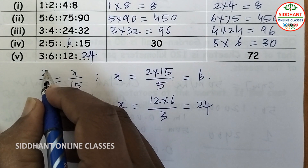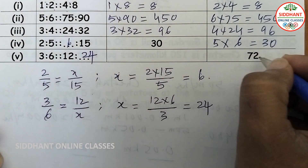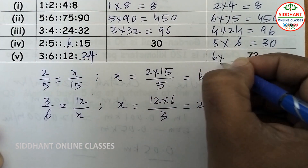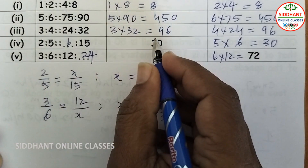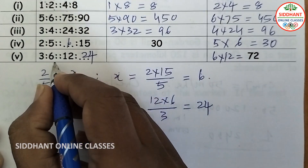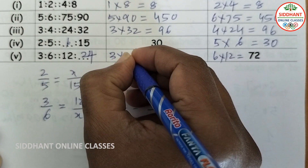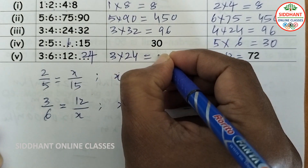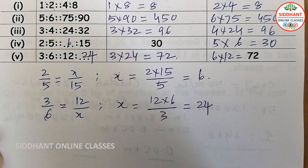Verification for the fifth proportion: the means are 6 and 12, so 6 into 12 equals 72. And the extremes 3 into 24 also equal 72, confirming the proportion is correct.